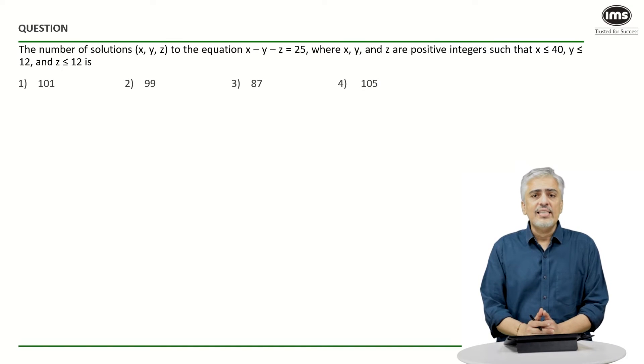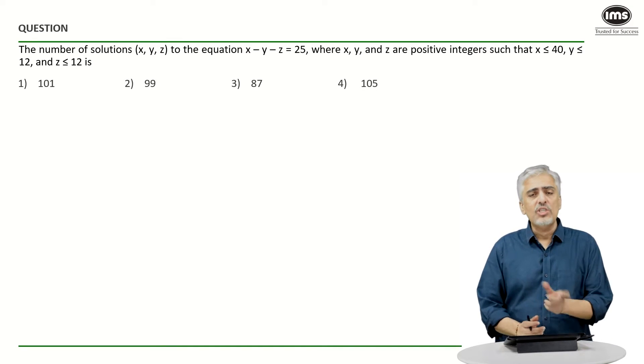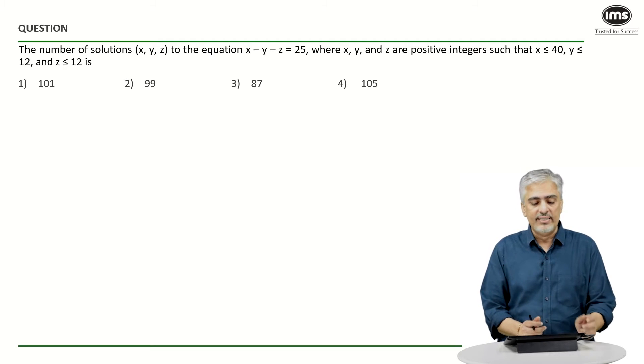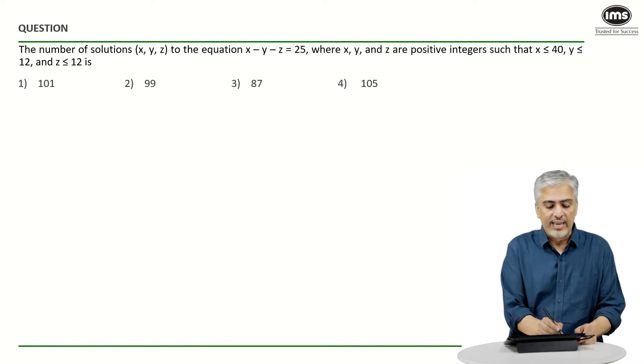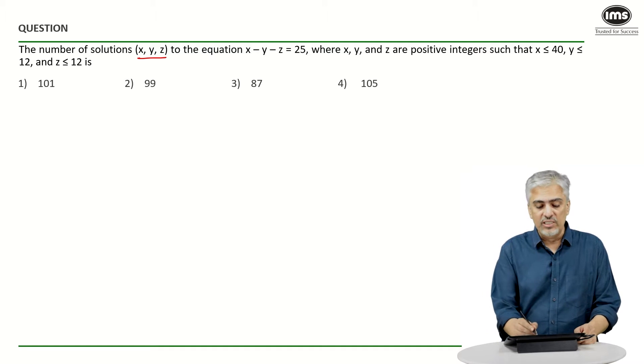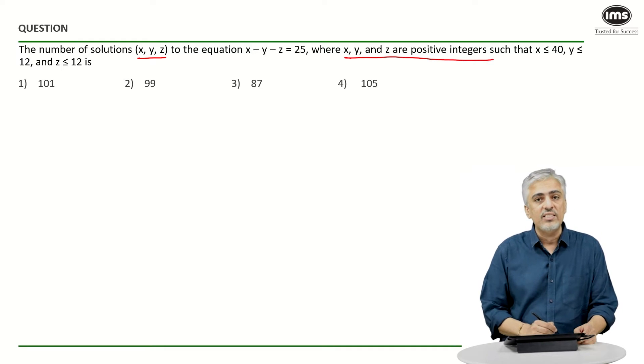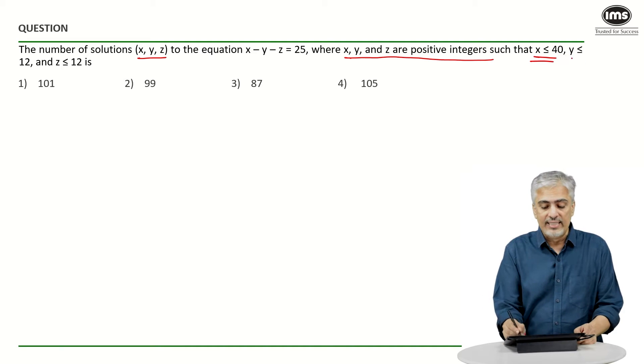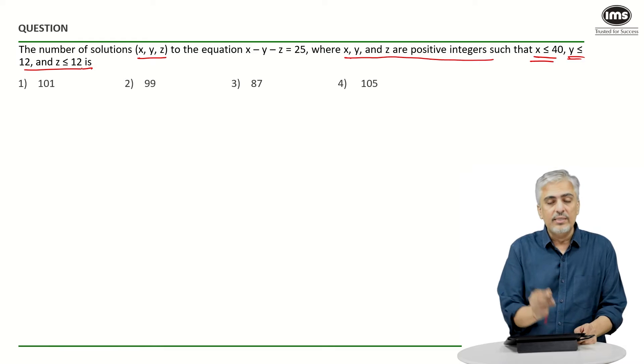Let's have a look at this question. Now this question looks pretty simple and straightforward. They've told us x minus y minus z is 25, and they want us to find the number of solutions to x, y, z, where there are different conditions given. First condition is that x, y, z all are positive integers, x is less than 40, and y and z both are less than 12.